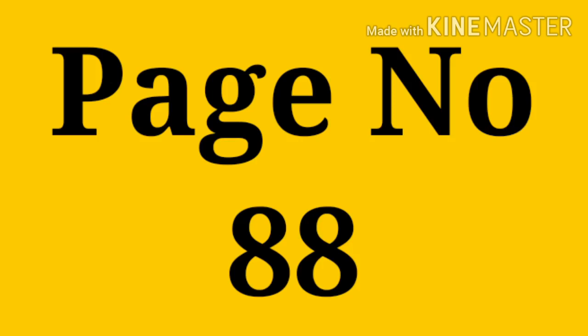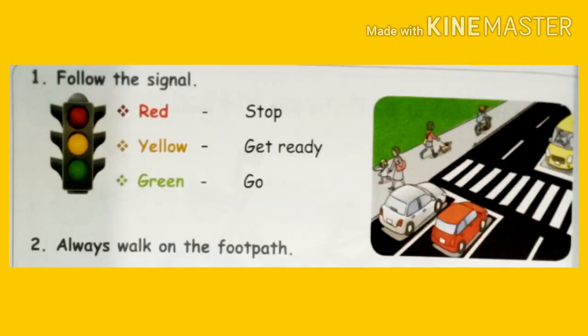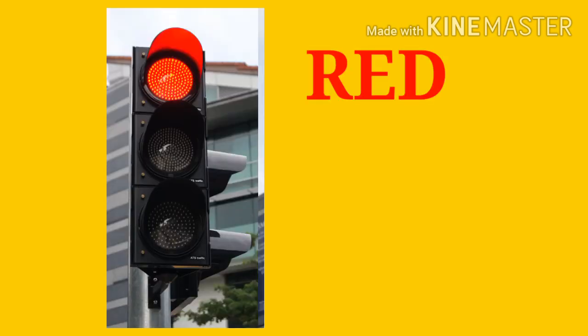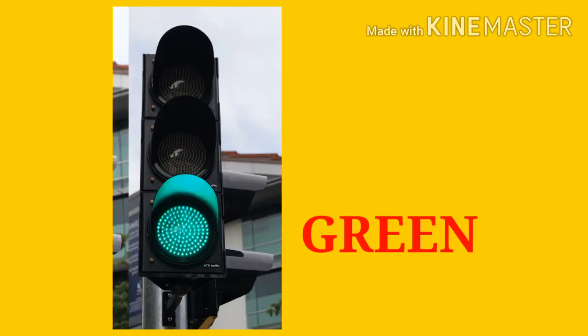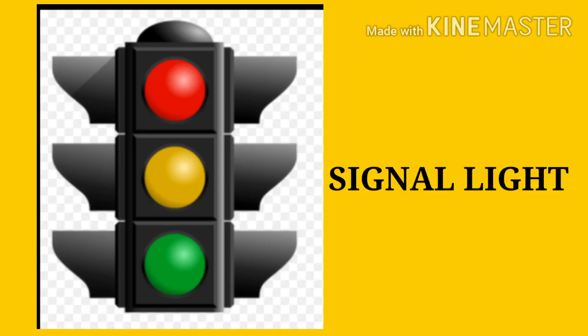Take page number 88. Follow the signal. Look at this signal — red means stop, yellow means get ready, green means go. When the red signal is on, we must stop our vehicle. When it is yellow, we get ready. When it is green, we go. We must always follow the signal.